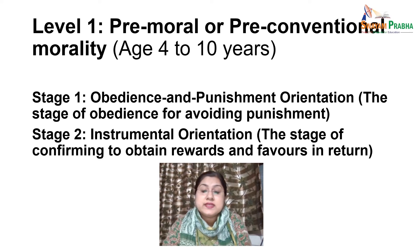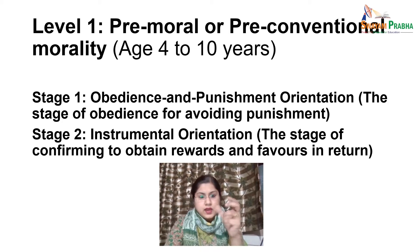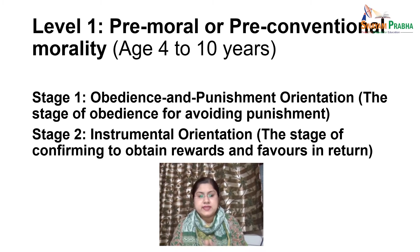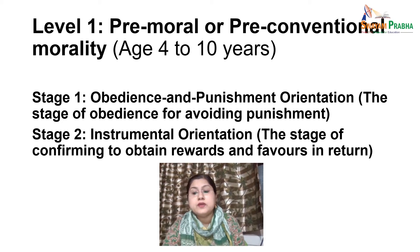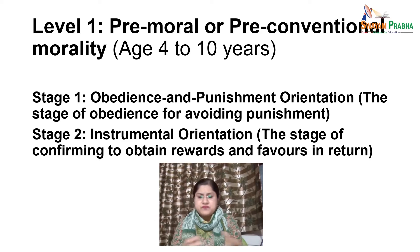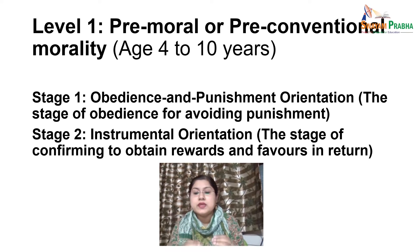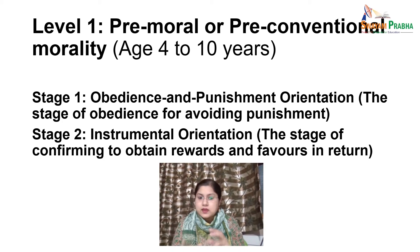Under Stage 1, which is obedience and punishment orientation, the focus is on the child's desire to obey rules and avoid being punished. For example, an action is perceived as morally wrong because the person doing it is punished. The worse the punishment for the act, the more bad the act is perceived to be.